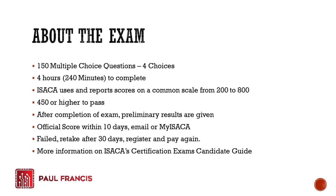After taking the exam, you'll see a preliminary result — either preliminary pass or preliminary fail. I don't believe those results change. They just show preliminary results while calculating the official score. Your official score will be emailed within 10 days, and you can also check your myISACA account for results. For me it was exactly on the 10th day for all three exams.